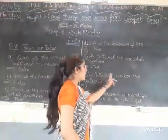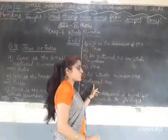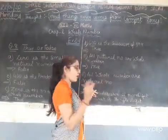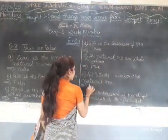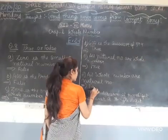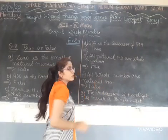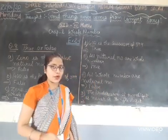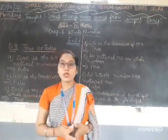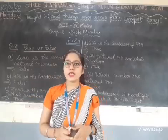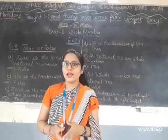All whole numbers are natural numbers — false. Why? Because natural numbers do not include 0. The smallest natural number is 1.